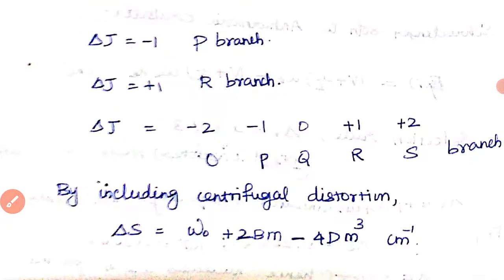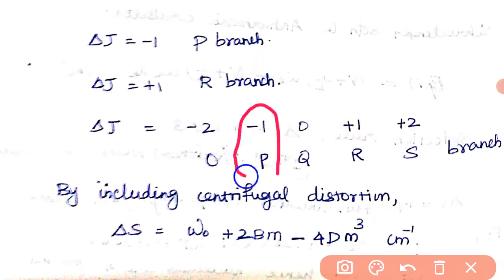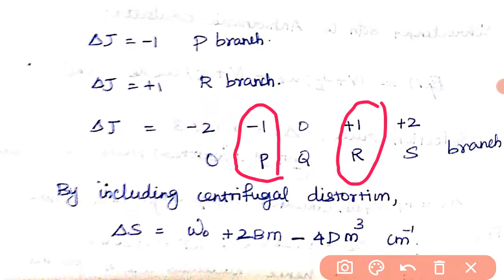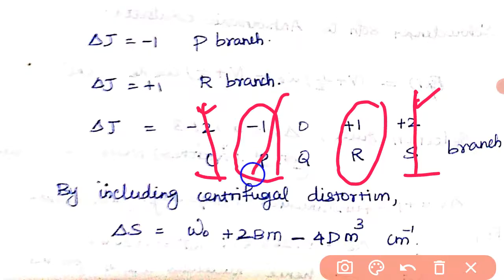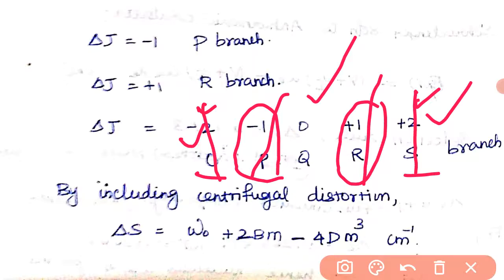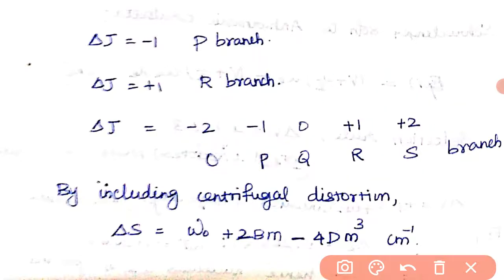For ΔJ = −1, this gives the P branch. So we have: P branch (ΔJ = −1), Q branch, and R branch (ΔJ = +1). There are also O branch (ΔJ = −2) and S branch (ΔJ = +2). However, for common rotational vibrational spectra of diatomic molecules, the P branch, Q branch, and R branch are the main ones observed.